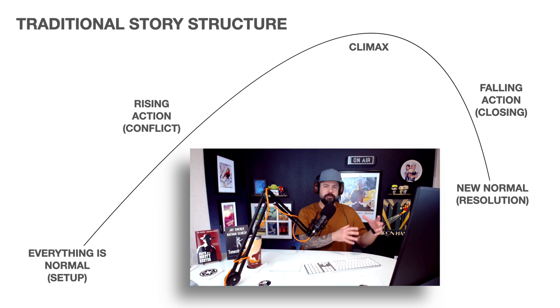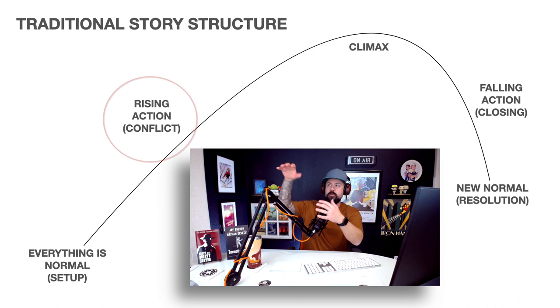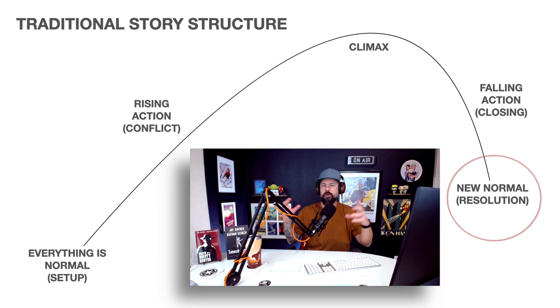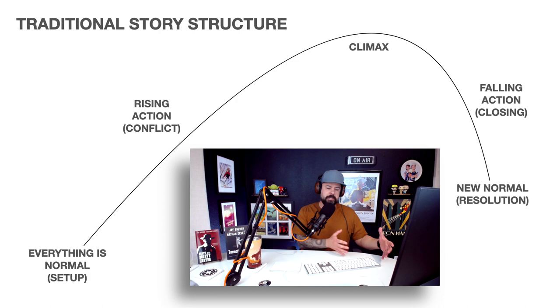Let's start by taking a look at classic, traditional storytelling structure. Generally speaking, this arc is what most classical storytellers would have used, going back even thousands of years. Everything is normal is where we begin — that's where the setup starts. Then we have rising action where there's lots of conflict. We reach the pinnacle of that conflict, which is the climax. And then we have falling action, which is the closing of the story, and then the new normal, which is our resolution.